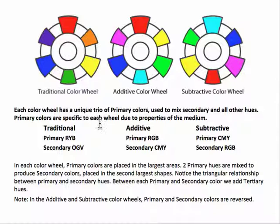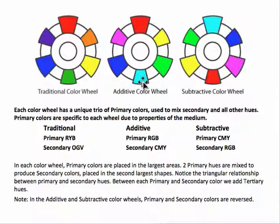Primary colors are specific to each wheel due to the properties of that medium. For traditional paint and pigments, the primary colors are red, yellow, and blue, used to mix the secondary colors — red and yellow make orange, and so forth. In light, red, green, and blue are required to mix the other colors. Red and green light combined make yellow; green and blue light combined make cyan. Notice there's no cyan or magenta in the traditional color wheel. Blue and red light combined make magenta, but we do not see that in paint.